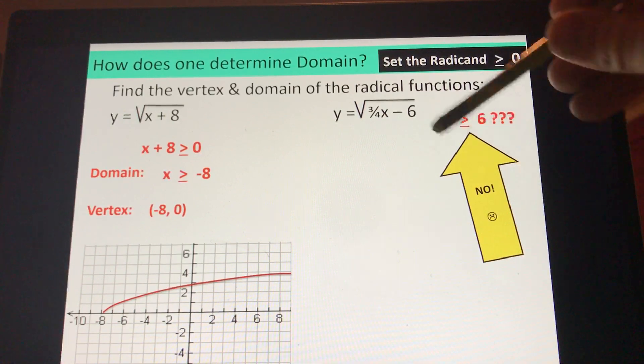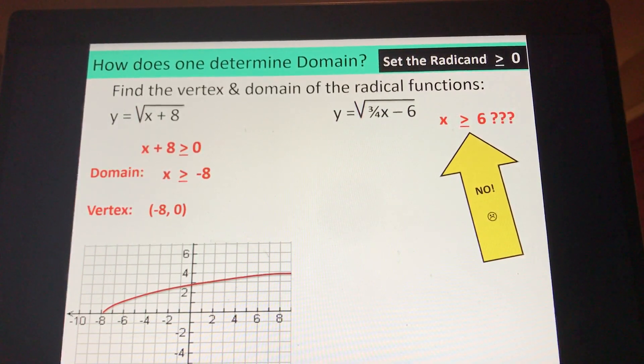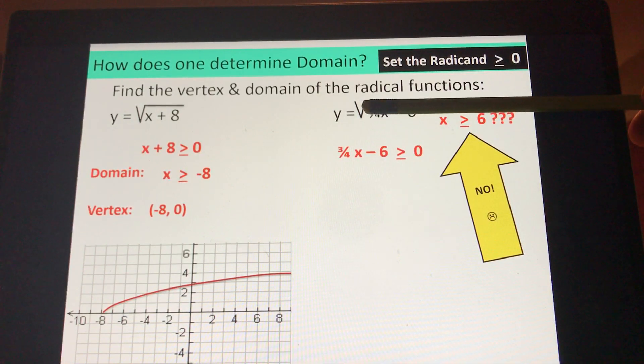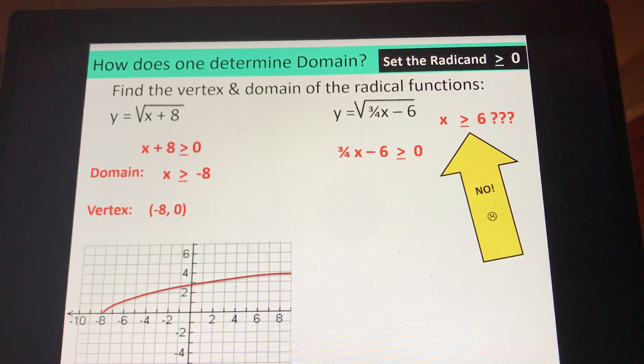And don't fall into this cardinal sin here, just looking at one of the numbers. You got to consider the three-fourths. Three-fourths is affecting this. Whatever this stuff is, it's behind my pencil, has to be greater than zero or it could be equal to zero, which is why I write that symbol right there. This is how you find domain or the vertex. Just solve the inequality.